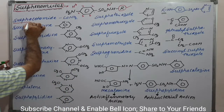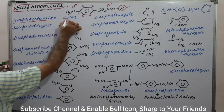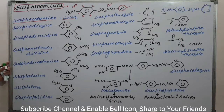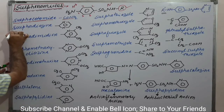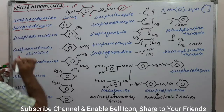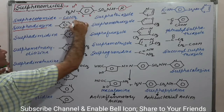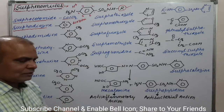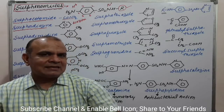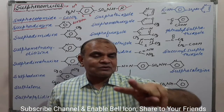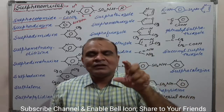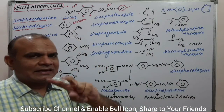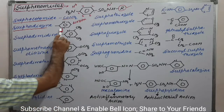For sulphacetamide, the suffix is 'acetamide,' which represents the amide group. Next is sulphadiazine. Diazine refers to a 6-membered ring containing 2 nitrogens: 'dia' means 2, 'aza' means nitrogen, and 'ine' indicates a 6-membered ring. So diazine is a 6-membered ring with 2 nitrogens.